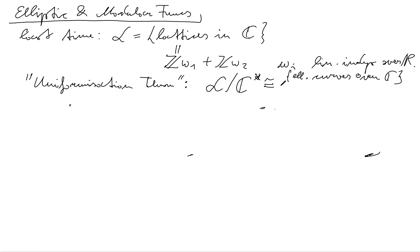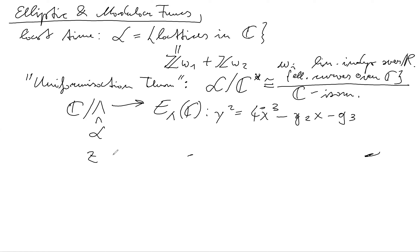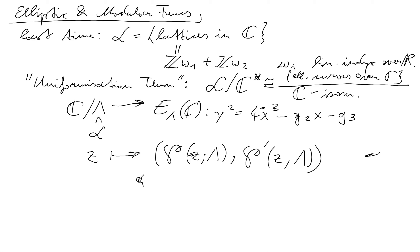The map we considered was: pick a lattice Λ in L, then ℂ/Λ maps to E_Λ over ℂ, the elliptic curve given by y² = 4x³ − g₂x − g₃. The map sends z to the tuple (℘(z,Λ), ℘'(z,Λ)), where ℘ is the Weierstrass p-function we saw last time.